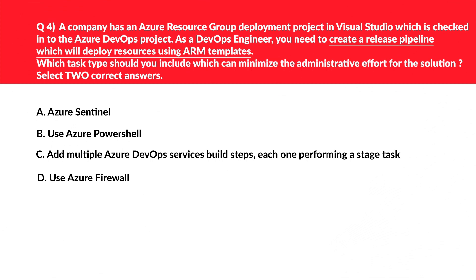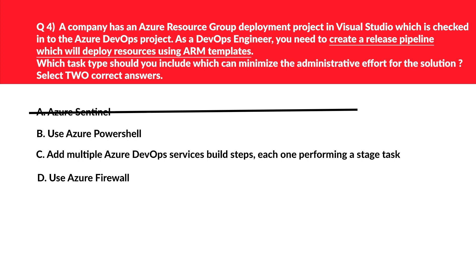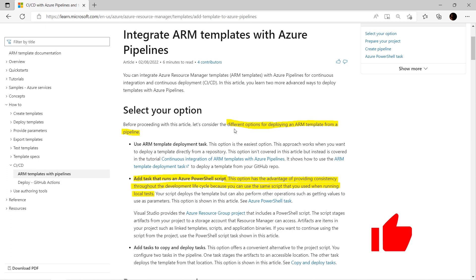We have an interesting question related to ARM templates and release pipelines. Options A and D mention Azure Sentinel and Azure Firewall — these are associated with security, and there is no security requirement in the question, so they are incorrect. Both PowerShell and Azure DevOps service build steps provide the same result, but one advantage of PowerShell is that we can use the same script used by developers in Visual Studio, providing consistency throughout the lifecycle. The official documentation lists PowerShell script as one of the options for deploying an ARM template from a pipeline. We lock B and C as the correct answer.